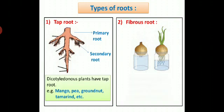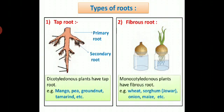Fibrous root: thread-like or fiber-like roots arising from the stem are called fibrous roots. Monocotyledonous plants have fibrous root. For example, wheat, sorghum or jawar, onion, maize, etc. show fibrous root.